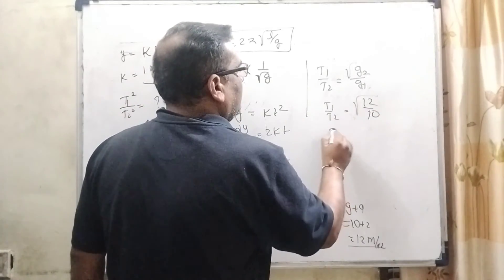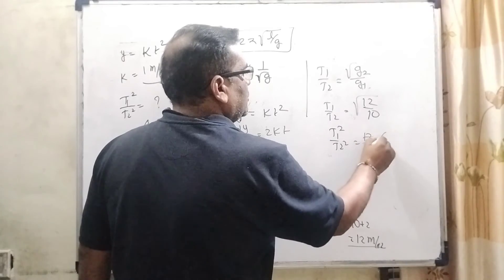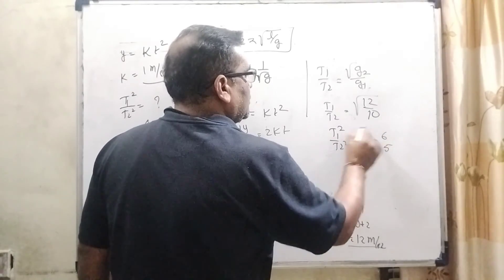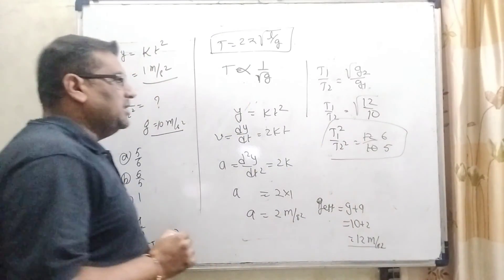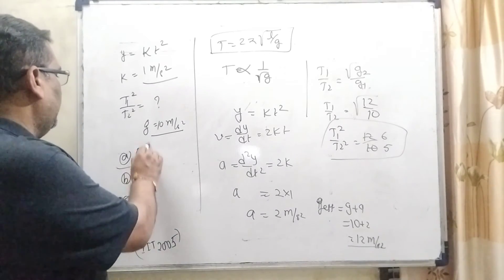And squaring both the sides T1 square upon T2 square, that is 12 by 10, which is 6 by 5. So, our ratio we get 6 by 5. Let us see which option is matched here. Option B is correct. I hope you understood this question.